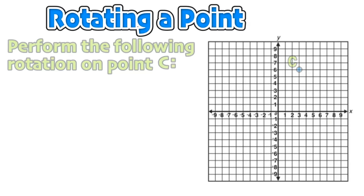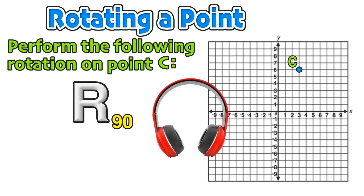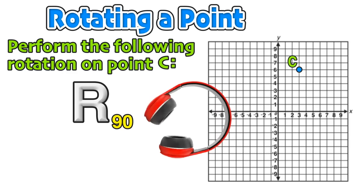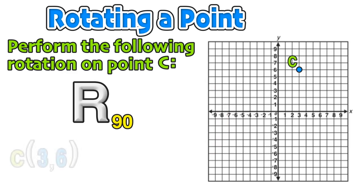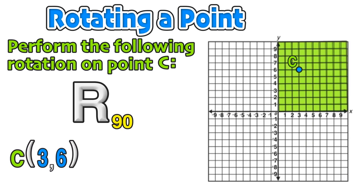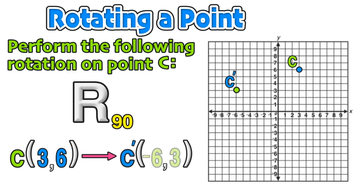For our first example, we are going to rotate point C positive 90 degrees. Since the degrees is positive, we will be rotating counterclockwise. We start by writing down the coordinates of point C at (3, 6). Since point C lies in the first quadrant, we imagine taking that entire quadrant and rotating it one quarter turn, finding the image C′ with coordinates (−6, 3).